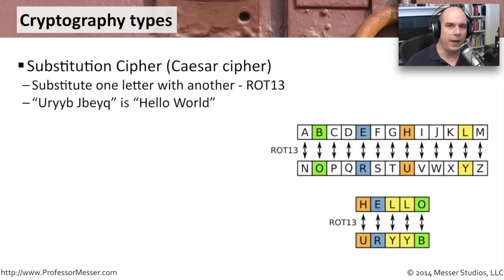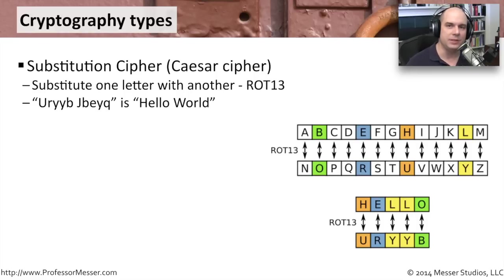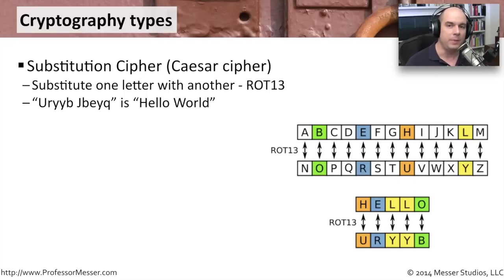There are many different ways to scramble up a message and encrypt it so that no one would be able to read it. One common way is something called a substitution cipher. This is one of the oldest methods of encrypting data. It's also called Caesar's cipher because Caesar is one of the people who originated this method of sending information back and forth and made it very popular.